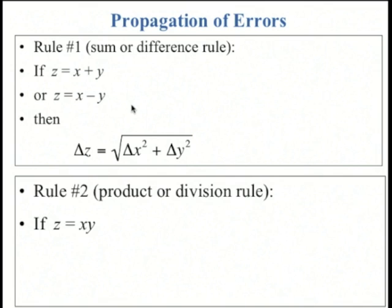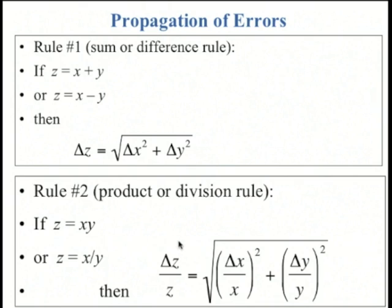Rule number two, the product or division rule. If you have z equals x times y, or z equals x divided by y, then the error in z divided by z, so the fractional error in z, is equal to the square root of the fractional error in x squared plus the fractional error in y squared.